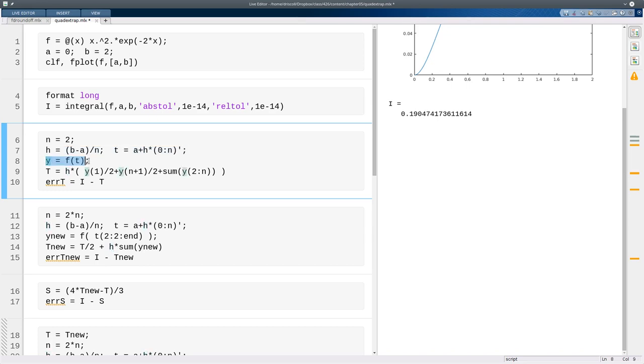Then y will be the value of f at all the nodes. And then based on that, here's a simple way to write the trapezoid formula. h times everything. The first and last values of f are divided by 2, and the rest are just added in together. Notice that in MATLAB, all indexes start with 1, so instead of referring to index number 0 for t0, we have to use 1. We have to shift all the indices up by 1, so instead of n, this is n plus 1, and so on. And this is already not bad, considering we've only used a few points.